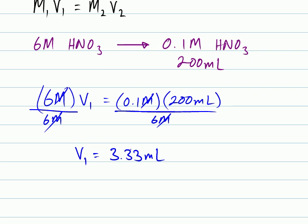So, I want just 3.33 milliliters of the 6 molar nitric acid solution. I add water to it until it makes 200 milliliters, and that will give me the desired concentration in the end.